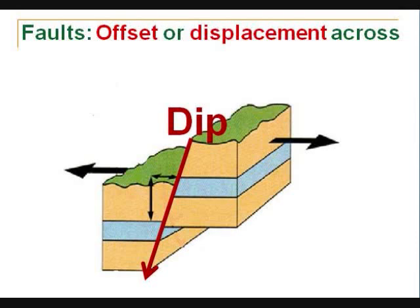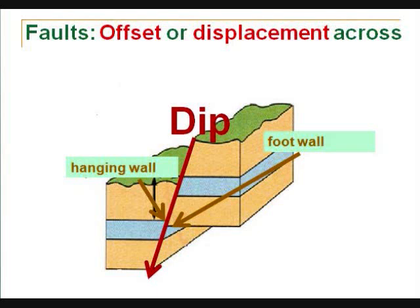These faults have two sides. We identify the different sides by naming them the hanging wall and the foot wall. The hanging wall is above the fault line or on top of the angle, and the foot wall is below the fault line or below the angle.